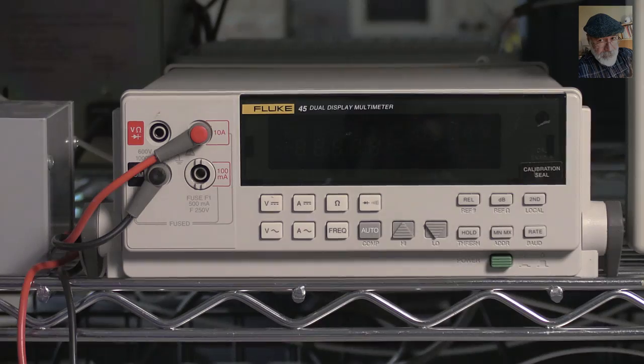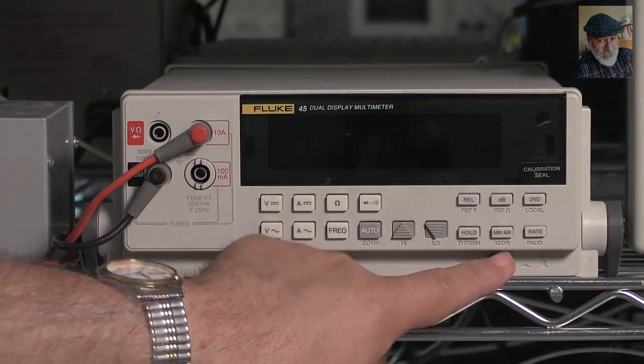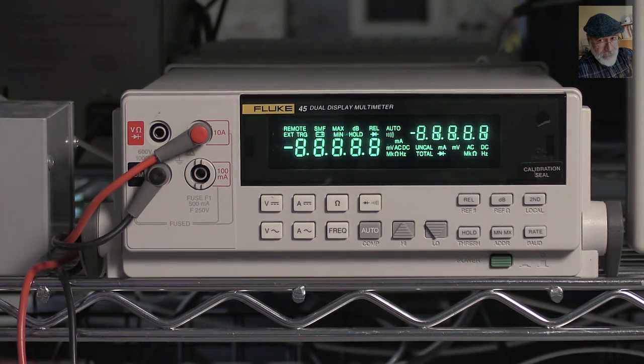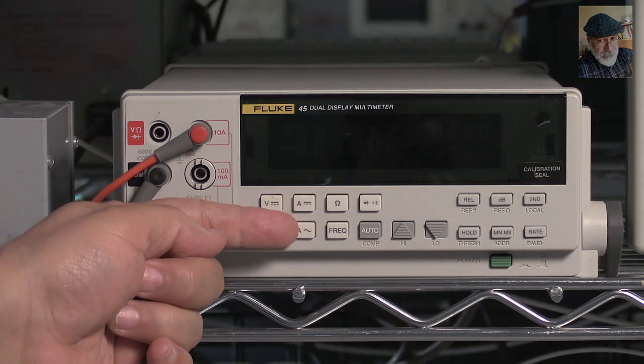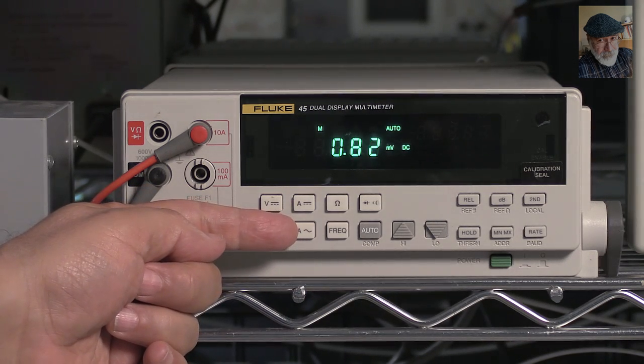Third, turn the multimeter on. And fourth, press the selection button with the letter A and the two parallel lines.